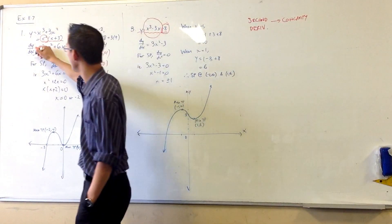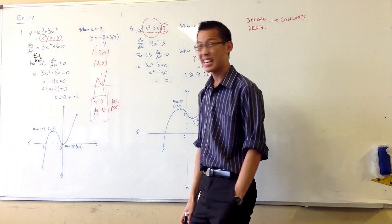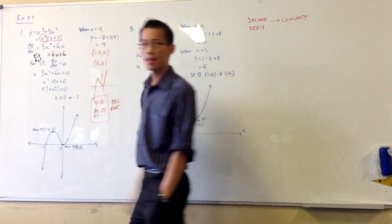Can you see it? Can you tell me? 6x, that's the first one, plus 6, right? There's my second derivative.